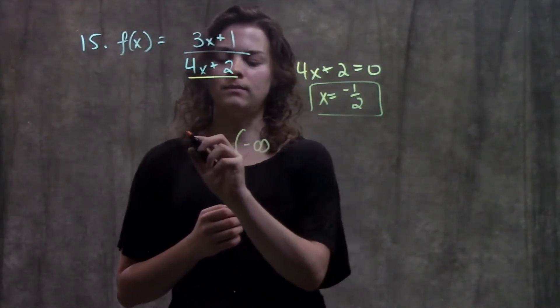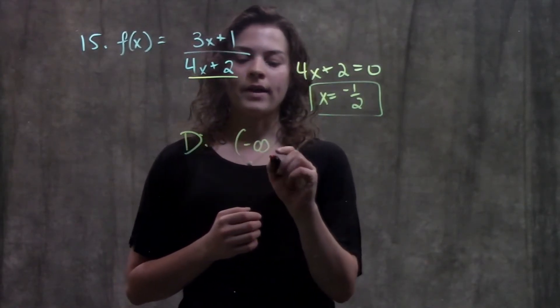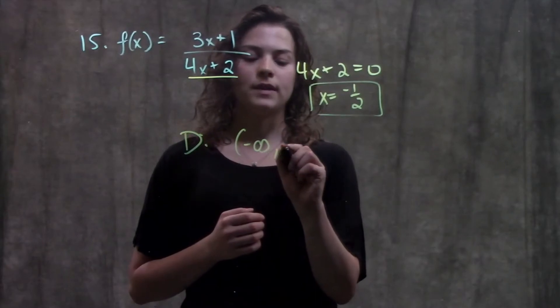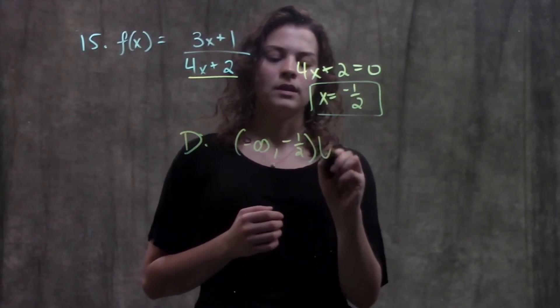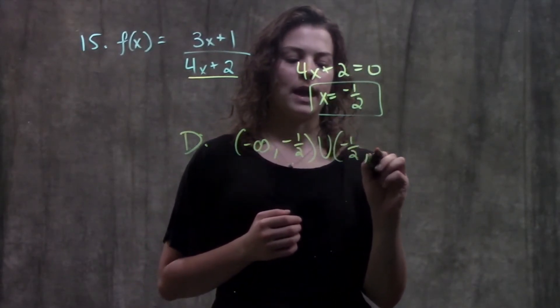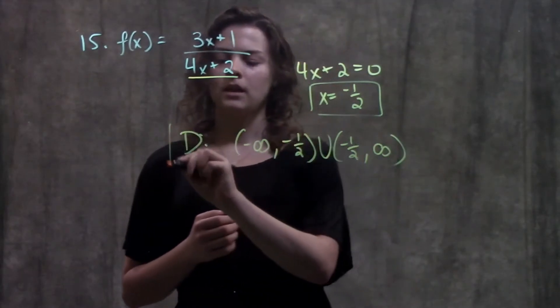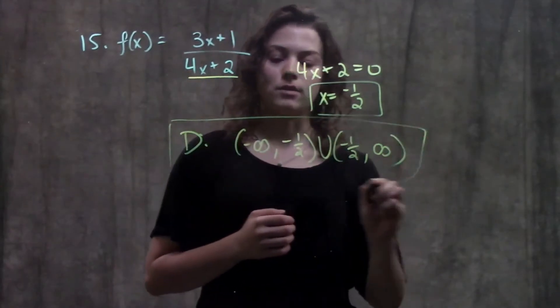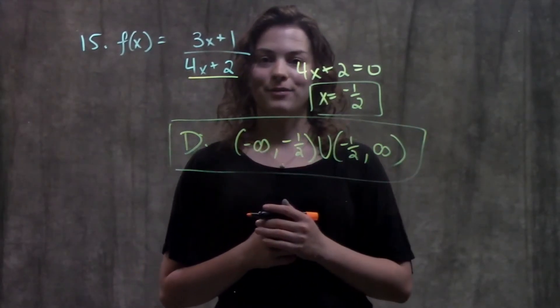So I can write that as my domain being all the values from negative infinity to negative one-half, union from negative one-half to positive infinity. The only value not included is negative one-half.